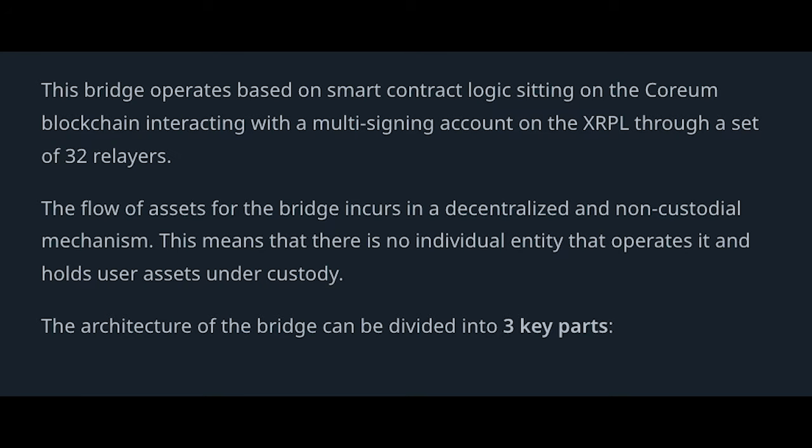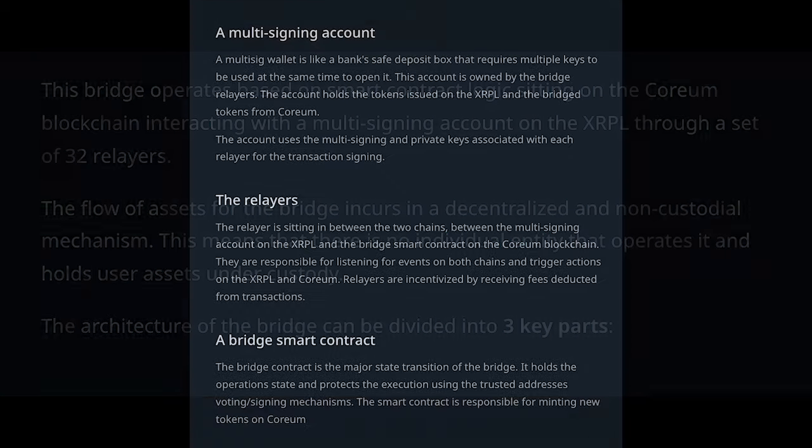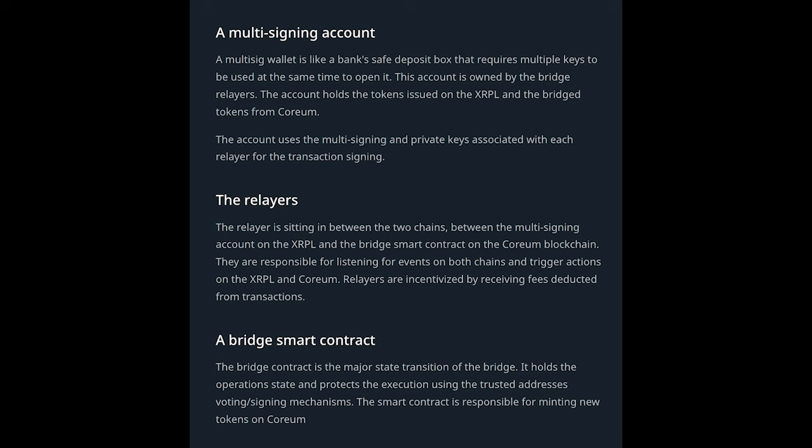The flow of assets for the bridge utilizes a decentralized and non-custodial mechanism, and the user retains self-custody of their assets. The architecture of the bridge can be divided into three key parts: the multi-signing account, the relayers, and the bridge smart contract.